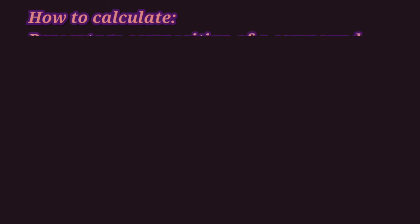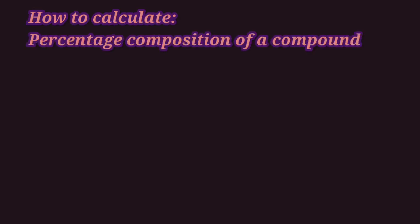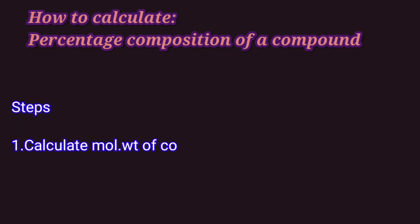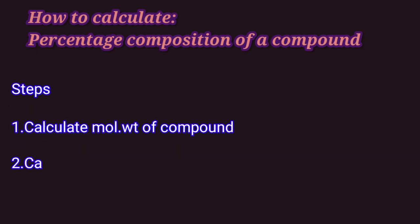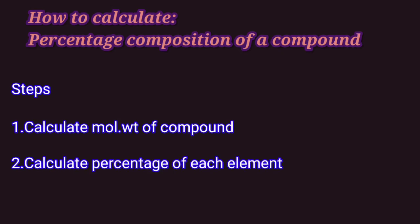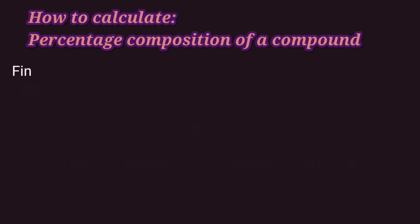Let us now see how to find percentage composition of a compound. We have to follow these two steps. The first step is to find the molecular weight of the compound. The second step is to find the percentage of each element in the compound.